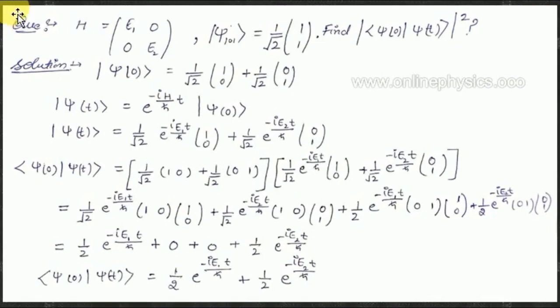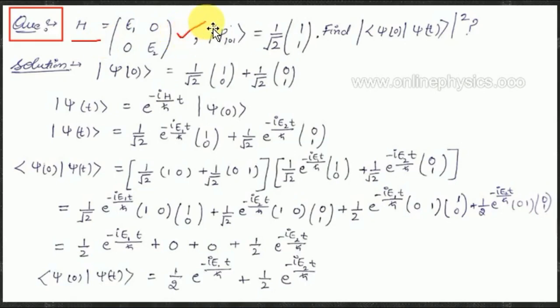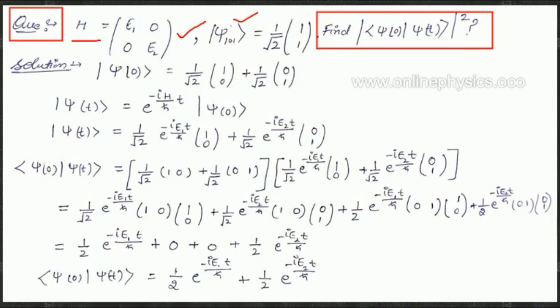Now let's come to the second question. Here we have a Hamiltonian given in matrix form equal to [[e1, 0], [0, e2]], and the wave function psi at t = 0 is (1/√2)(1, 1). We have to find the square of the inner product of psi at t = 0 and psi at t.